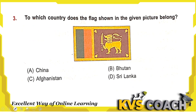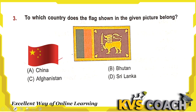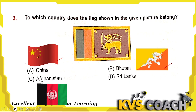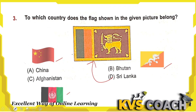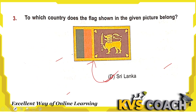Next question: to which country does the flag shown in the picture belong? Option A is China — this is China's flag. Option B is Bhutan — this is Bhutan's flag. Third is Afghanistan — this is Afghanistan's flag. Option D is Sri Lanka — this is the Sri Lanka flag. The right answer is option D, Sri Lanka.